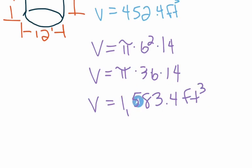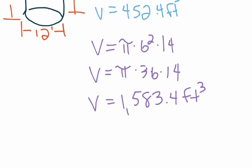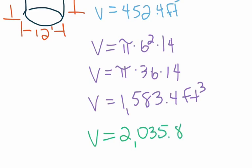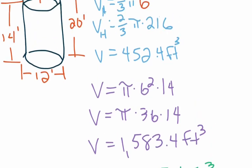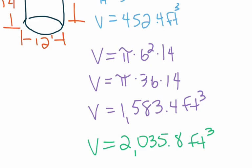We have the volume of the cylinder at 1,583.4 cubic feet and the volume of the hemisphere at 452.4 cubic feet. We're trying to find the total volume, so we add these two together: 1,583.4 plus 452.4 gives us 2,035.8 cubic feet. So a silo with a 6-foot radius and 20-foot overall height has a total volume of 2,035.8 cubic feet.